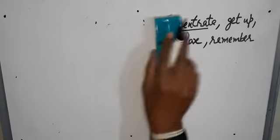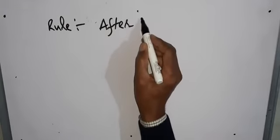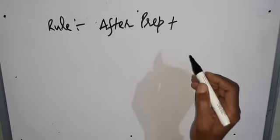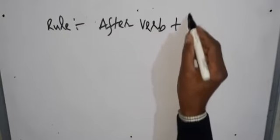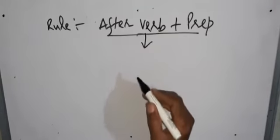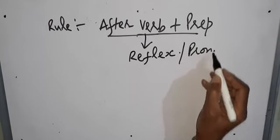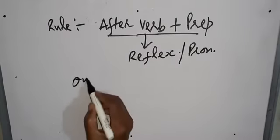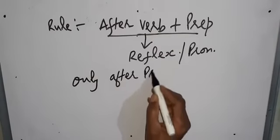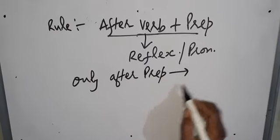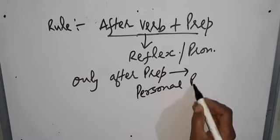These are some tips. Now, to conclude with a rule: after a verb plus preposition, we always make use of a reflexive pronoun. And only after a preposition alone, we always take a personal pronoun.